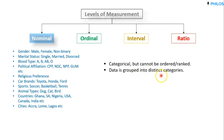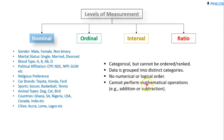That's one characteristic of nominal level data. Another characteristic is that data is grouped into distinct categories — you cannot be in two or more categories at the same time, like you cannot be single and married at the same time. Also, there is no numerical or logical order, and you cannot perform mathematical operations like addition, subtraction, multiplication, or division. You cannot say male plus female or get an answer for female minus male.